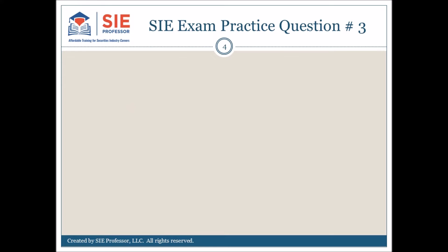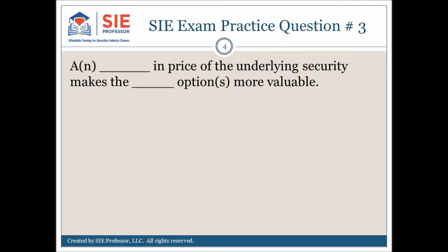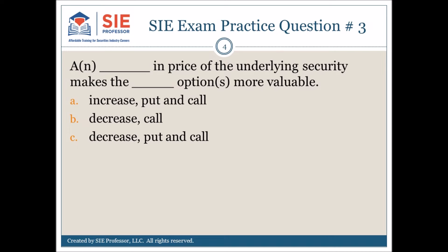SIE exam practice question number 3. A blank in price of the underlying security makes the blank options more valuable. A) increase, put and call; B) decrease, call; C) decrease, put and call; or D) increase, call. Pause here to consider the choices and mark your answer.